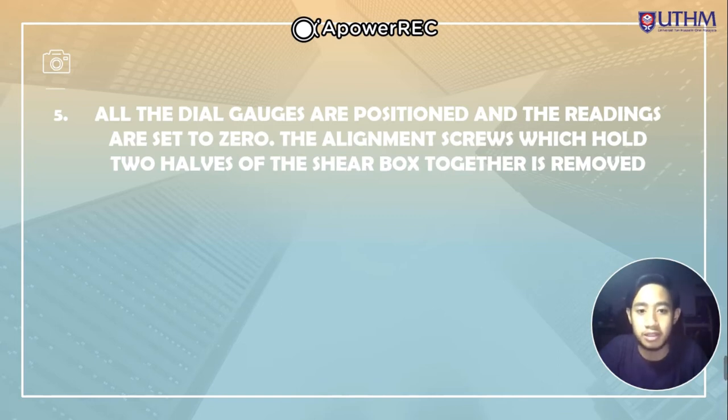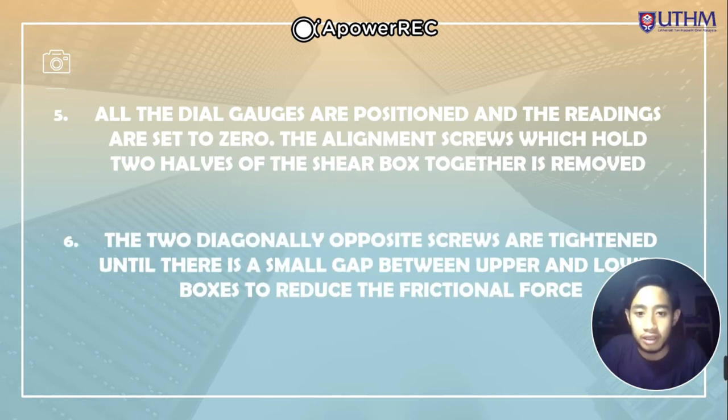For step number six, the two diagonally opposite screws are tightened until there is a small gap between upper and lower boxes to reduce the frictional force.